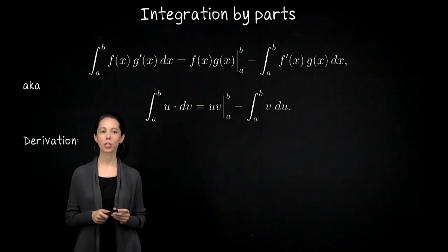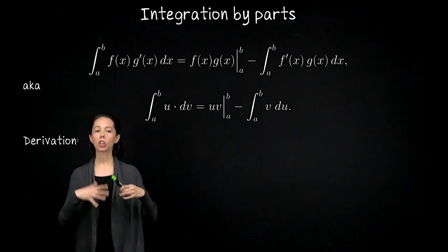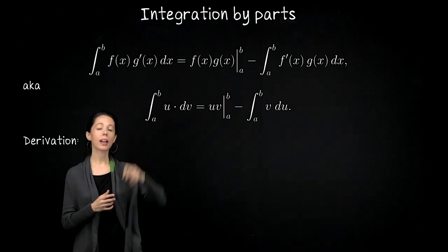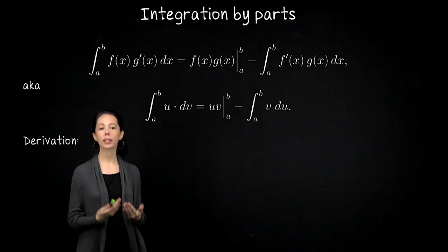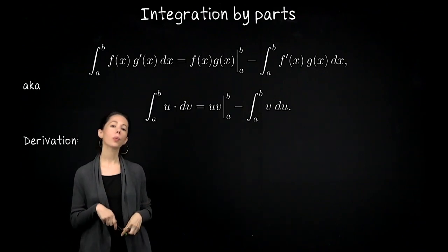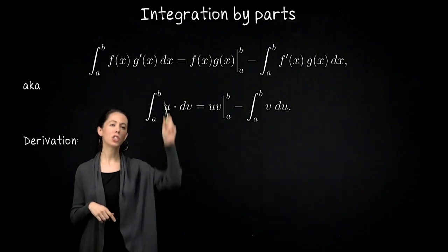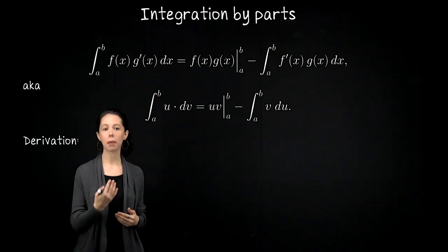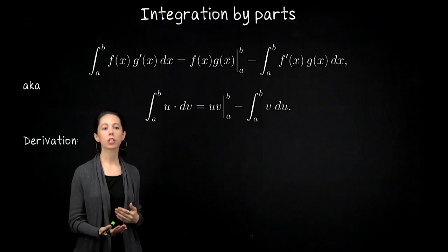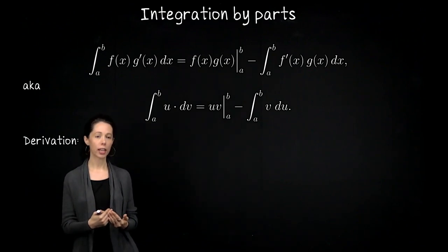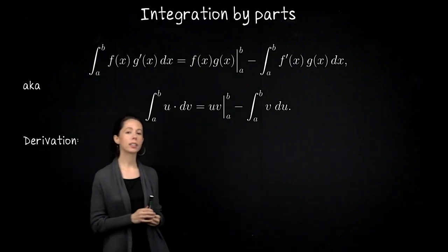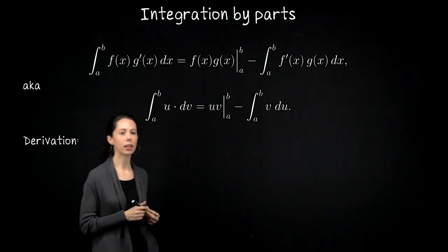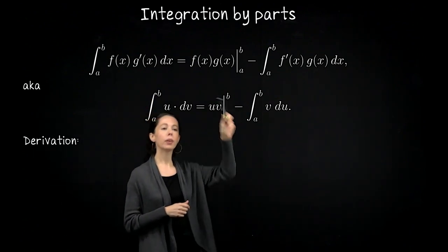With integration by parts, you're looking at the product of two expressions. You have two functions and you can identify one that you would like to call f of x and the other one which you would like to call g prime of x. The idea is that f is a function you wouldn't mind differentiating and g is a function you wouldn't mind anti-differentiating. If you can do both of those actions, you can take this integral and rewrite it in a new form.